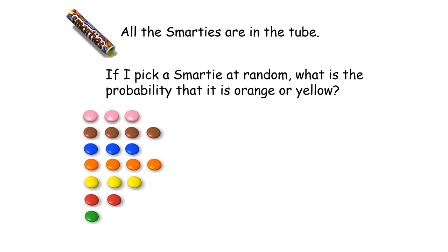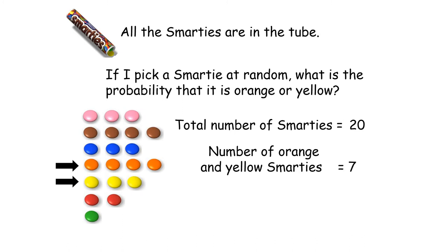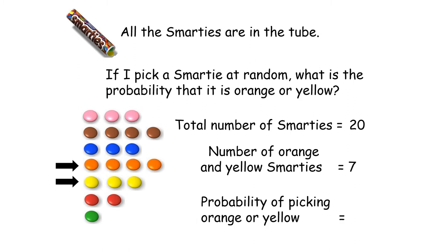All the Smarties back in the tube - a more challenging one. If I pick a Smartie at random, what is the probability that it's orange or yellow? There are 20 Smarties total. There are 4 orange and 3 yellow, giving a total of 7 orange or yellow Smarties. So the probability of picking an orange or yellow Smartie is 7 out of 20. That cannot be simplified, so that's our final answer.